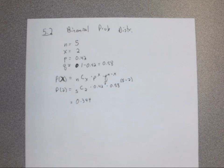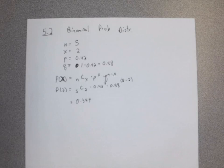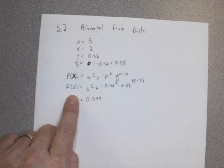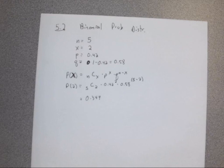What's kind of funny is that 'exactly two' doesn't become very useful. The better question — if you're Amazon — is 'two or more are comfortable.' To find that, you'd have to find the probability of 3, probability of 4, and probability of 5, and then add them together. The probability of exactly one thing happening is always going to be relatively small.